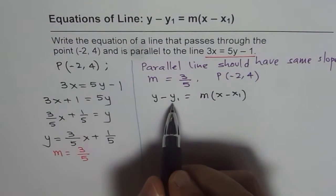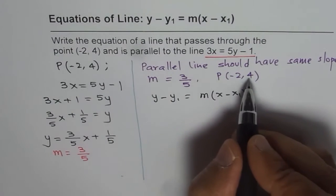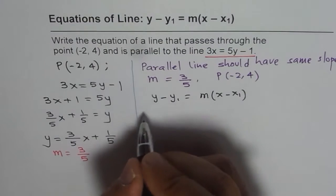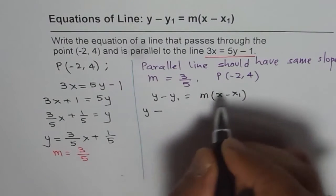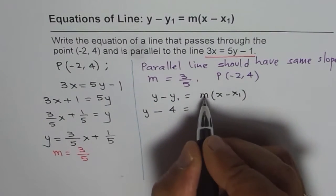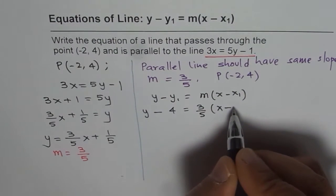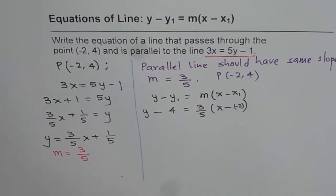So y1 value is 4 and x1 is minus 2. Let's substitute. So we have y minus 4 equals to slope of 3 over 5 times x minus minus 2.